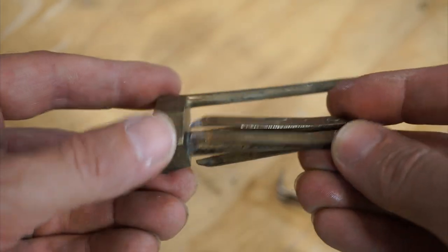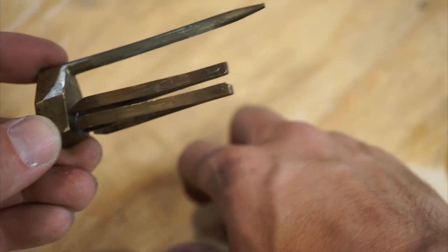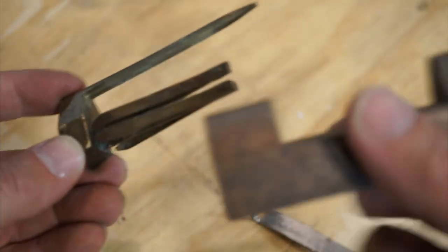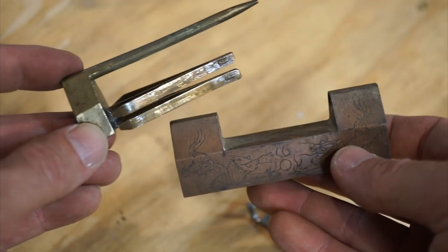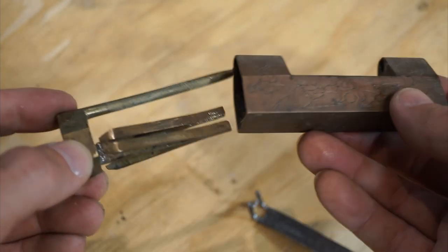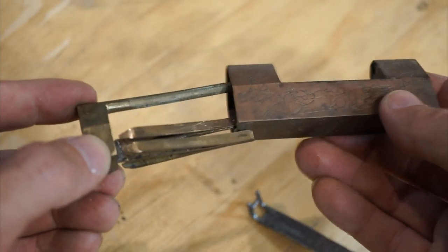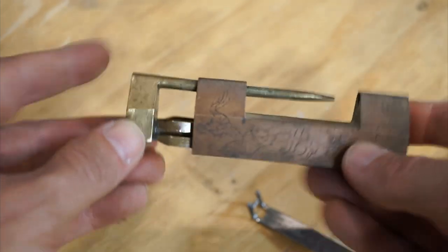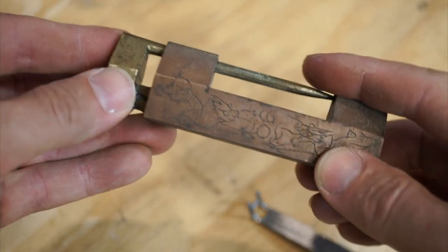There's a very thick base here, but the rest of it is pretty thin metal. So you can see it's a pretty simple mechanism, and if you ever need to get one of these open, that is how you can do it.